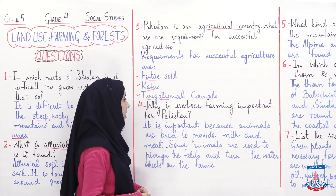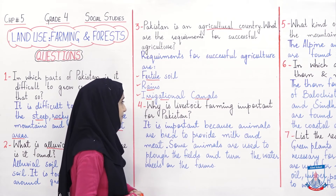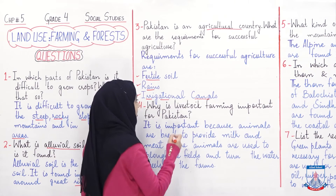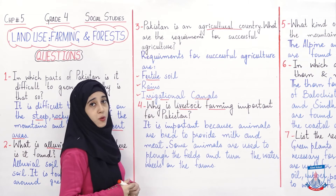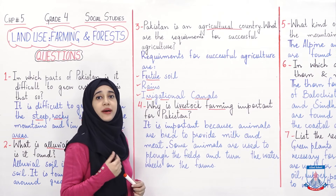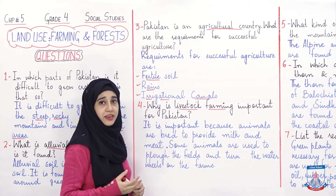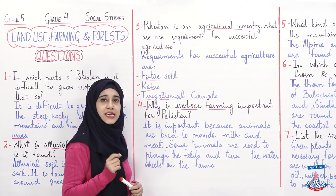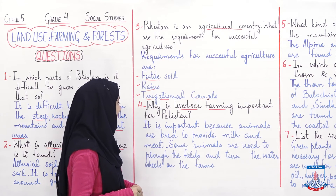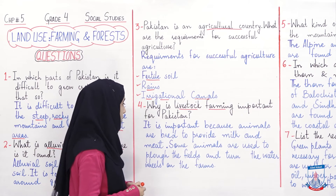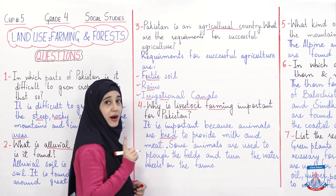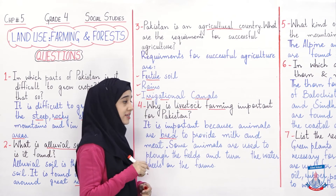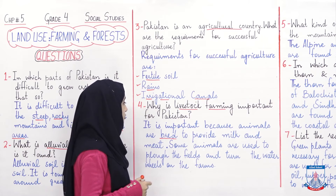Why is livestock farming important for Pakistan? اب وہ آپ سے پوچھا ہے کہ livestock farming یعنی جانوروں کو رکھنا اور پالنا — why is it important for Pakistan؟ یہ ہماری country کے لیے کیوں ضروری ہے؟ Livestock farming بھی agriculture کا ہی حصہ ہے۔ It is important because animals are bred to provide milk and meat. bread یعنی bred کا مطلب ہوتا ہے پالنا — it is the second form of breed.